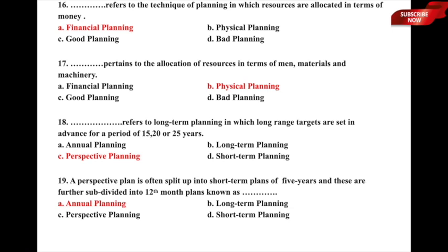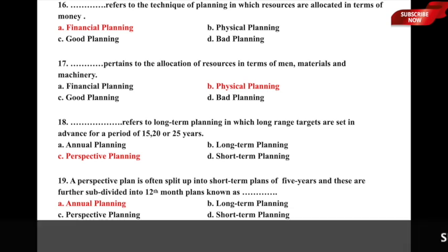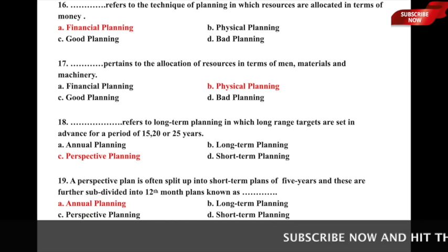Question 19: A perspective plan is often split into short-term plans of 5 years, and these are further subdivided into 12-month plans known as dash — whether it is a) annual planning, b) long-term planning, c) perspective planning, or d) short-term planning. Since it is a 12-month period, the correct answer is option a) annual planning.